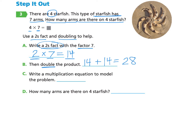Now it asks us to write a multiplication equation to model the problem. They already wrote it for us: four starfish, each with seven arms — so 4 × 7 = 28. The last part asks how many arms are there on four starfish? We can answer confidently: 28 arms. Please remember you can always go back and rewatch this video as needed and pause at any time.